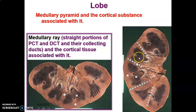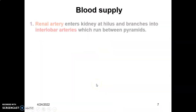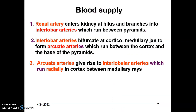A renal lobe is made up of a medullary pyramid and the cortical substance associated with it. The medullary rays are the straight portions of the proximal and distal convoluted tubules and the collecting ducts with the cortical tissue associated with them. The kidney is supplied by the renal artery, which comes from the abdominal aorta and enters the kidney at the hilum, where it branches to form interlobar arteries that run between the pyramids.